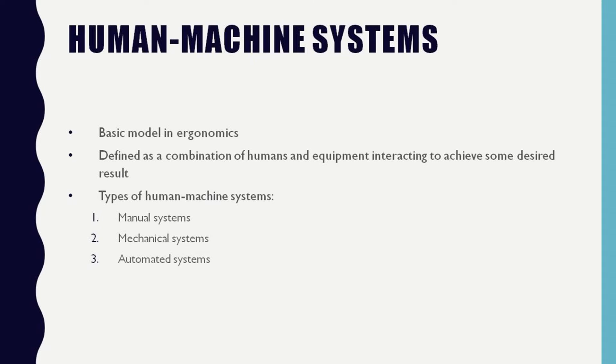These are all about the interactions, and we will slowly go into the detail of each one — human to machine, machine to human, and machine to environment. Now we will discuss further about the human-machine system. The human-machine system is the basic model in ergonomics, defined as the combination of human, machine, and equipment interacting to achieve some desired result.